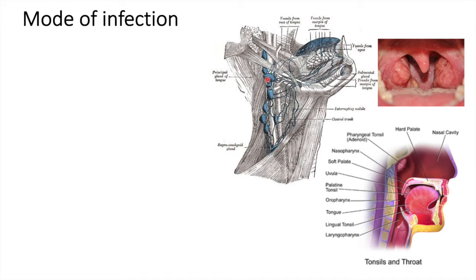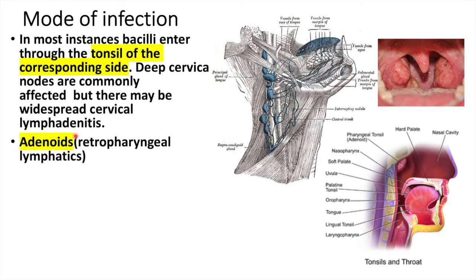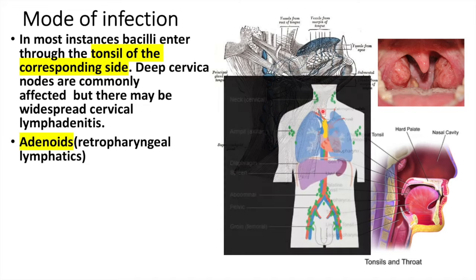The jugulodigastric lymph node is part of the upper deep cervical lymph nodes. In most instances, the bacilli enter this lymph node through the tonsillar crypts of the palatine tonsil — so from the tonsil it spreads to the jugulodigastric node. In about 20% of cases, the lymph nodes in the posterior triangle are affected by the involvement of adenoids, which are present on the roof of the nasopharynx.